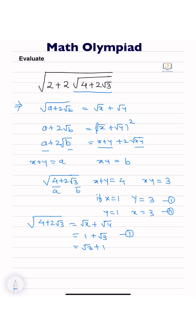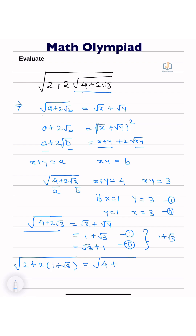Both conditions give the same result: the answer is 1 + √3. Substituting this value back, we get 2 + 2(1 + √3) = 4 + 2√3. So the answer is 1 + √3.